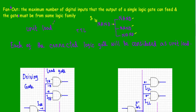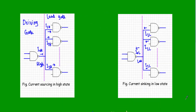To understand fan-out, we use the unit load concept. Each connected logic gate is considered as one unit load. If I connect the input terminal of a NAND gate to the output terminal of another NAND gate, that connected gate is considered a single unit load. The unit load determines how many connections we can make from the output terminal of a single logic gate.